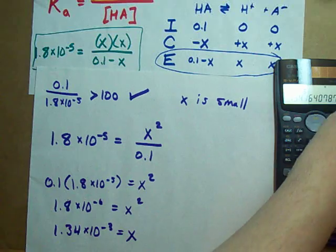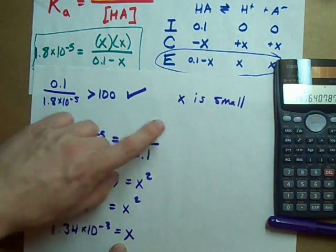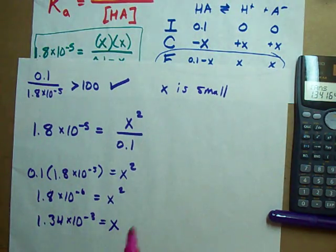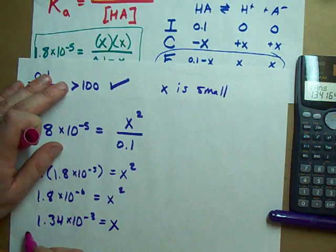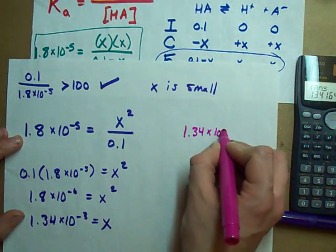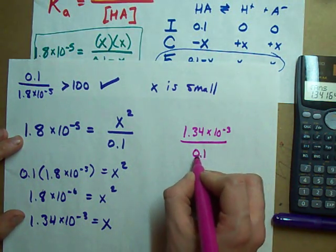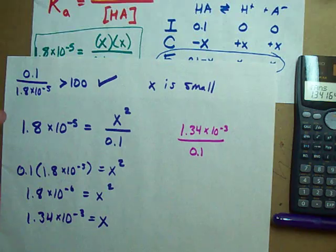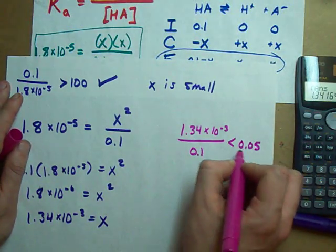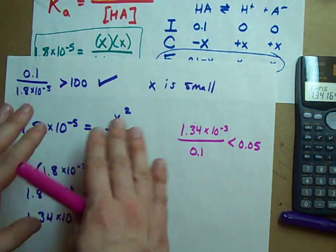1.34 times 10 to the negative 3 is my X. Now, if your teacher's all extra about it, they're going to want you to verify your assumption. What verifying your assumption actually is, is making sure that this number, 1.34 times 10 to the negative 3, is actually small relative to your initial concentration.